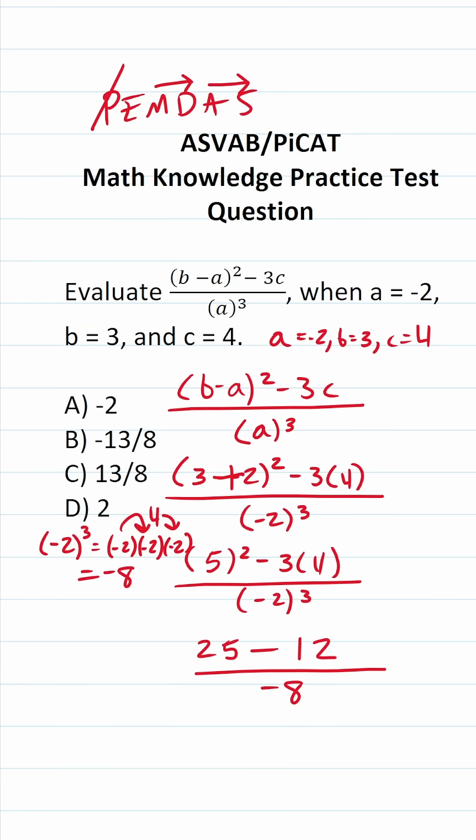Let's do 25 minus 12 next. If you can't do that mentally, you can do it off to the side. No one's looking at your scratch paper, so write anything you need. 25 - 12 = 13. So this becomes 13/(-8), which is the same as -13/8. After evaluating this expression, that's our result. This is answer choice B.